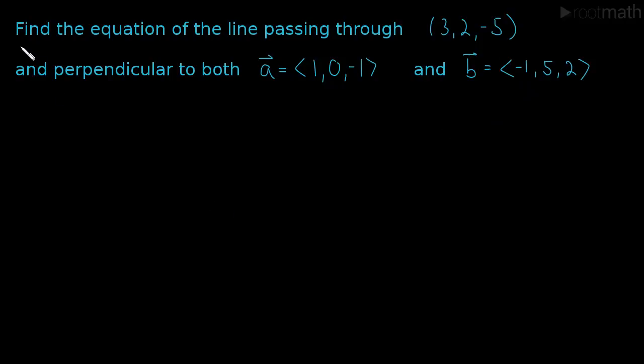Before I even begin, the second you see that you need to find the equation of a line, you should automatically know there's two pieces of information you need. You need a point, and you need a direction vector. This is very important. If you're looking for a line, you need to find these two pieces of information.